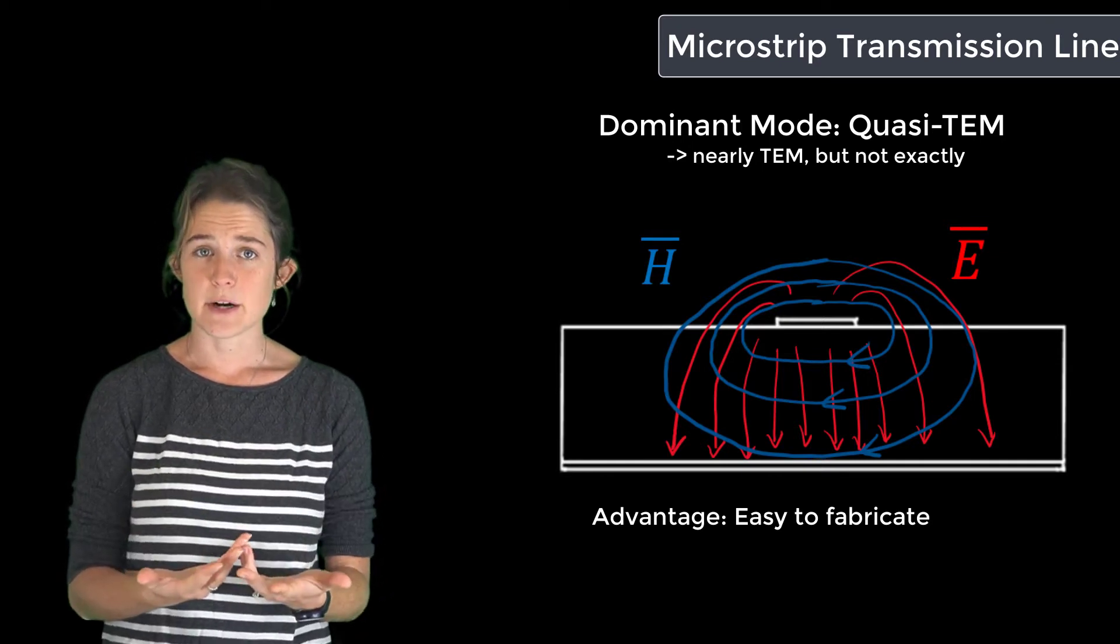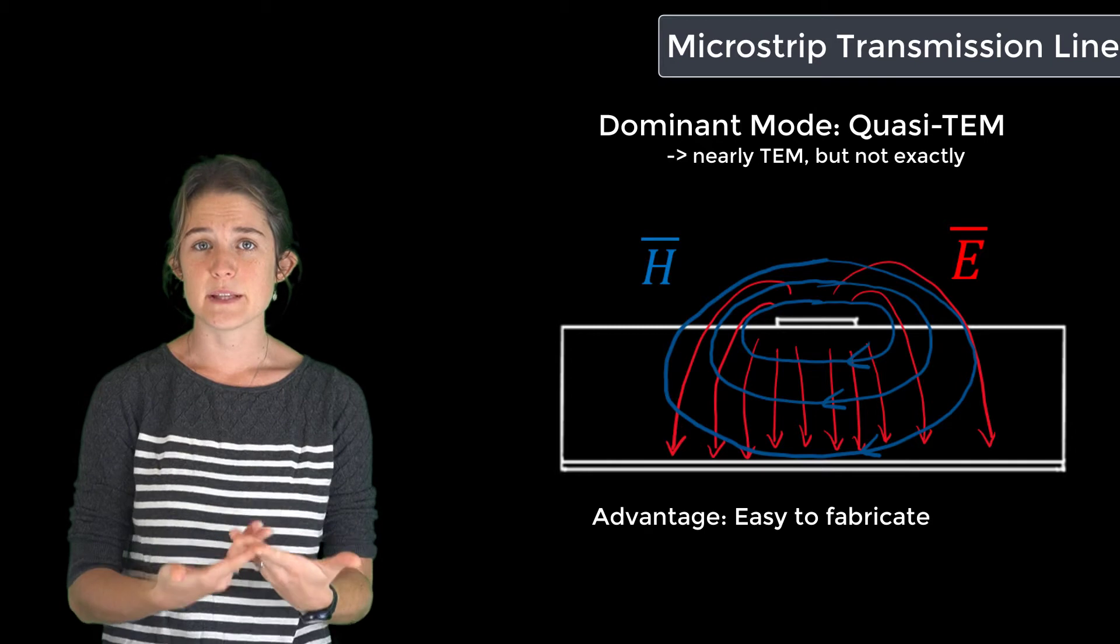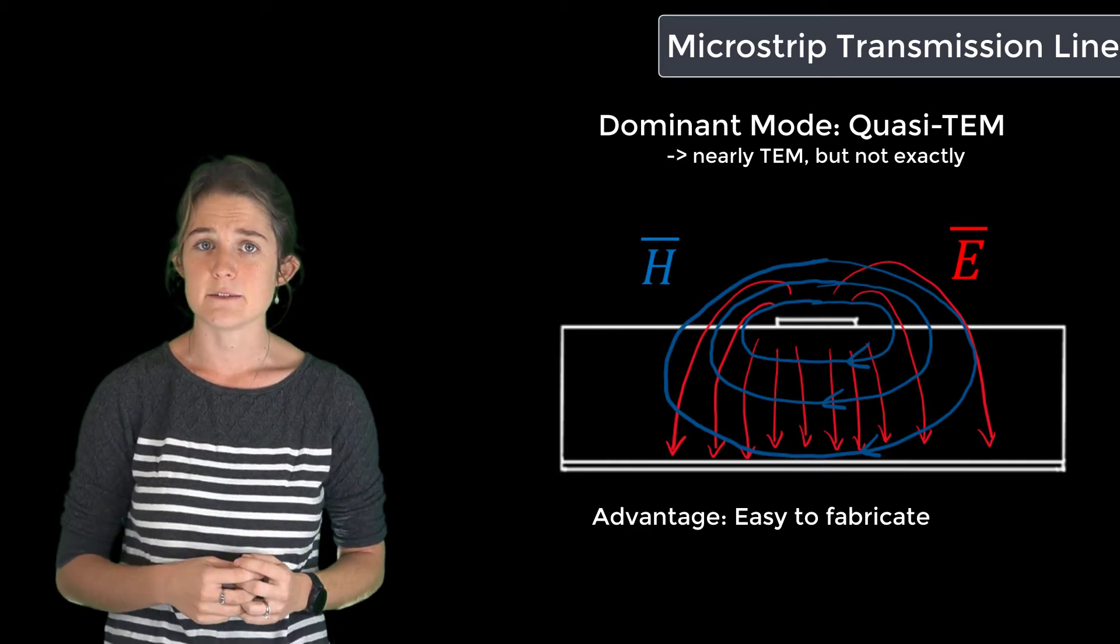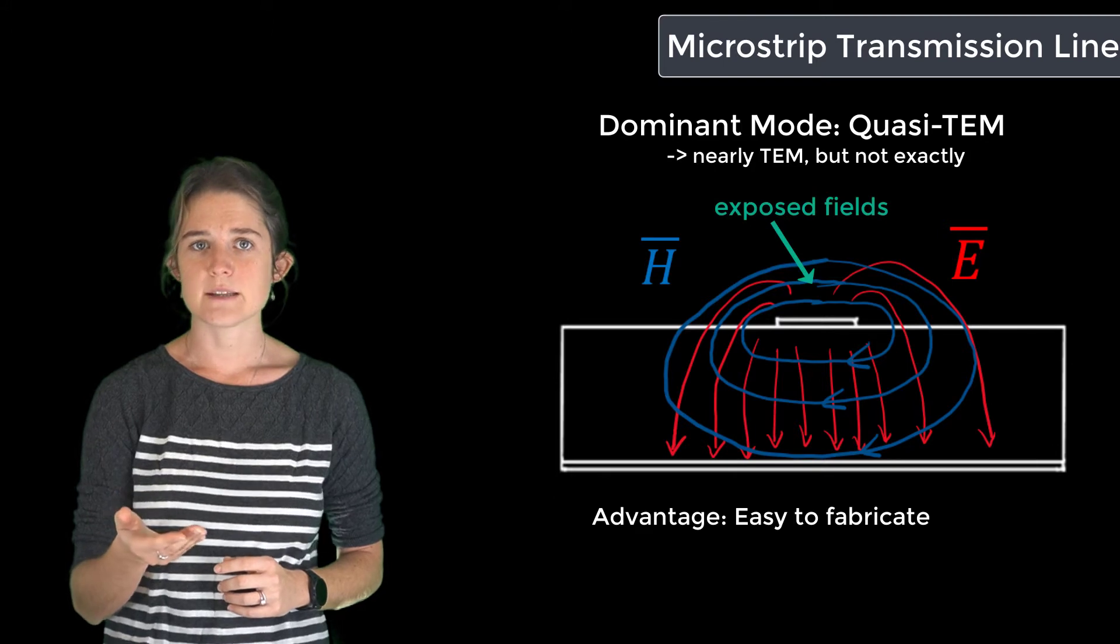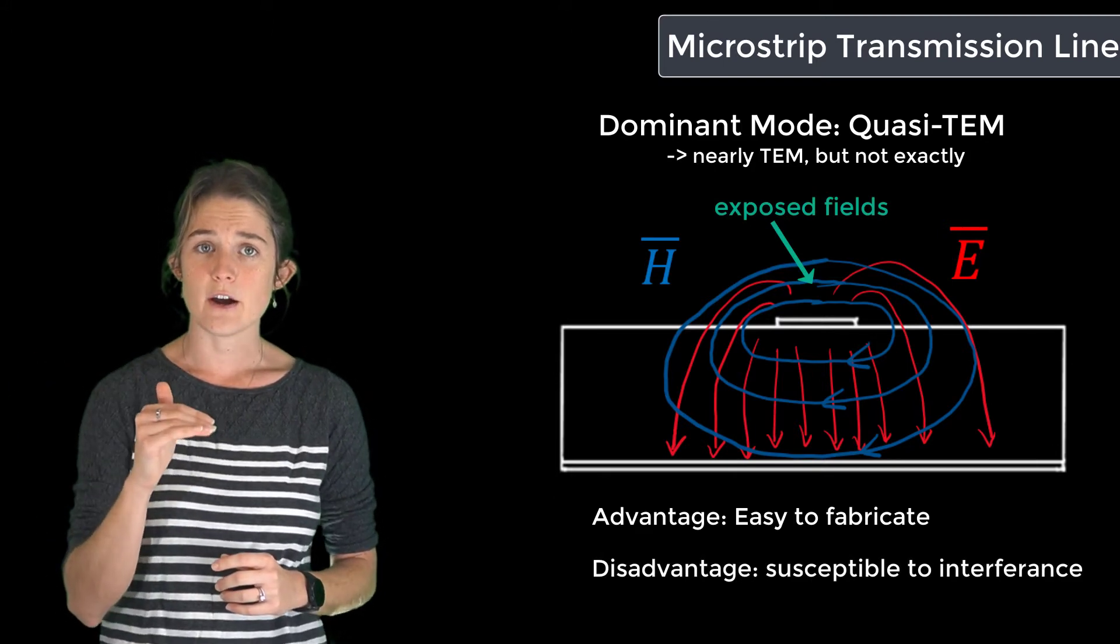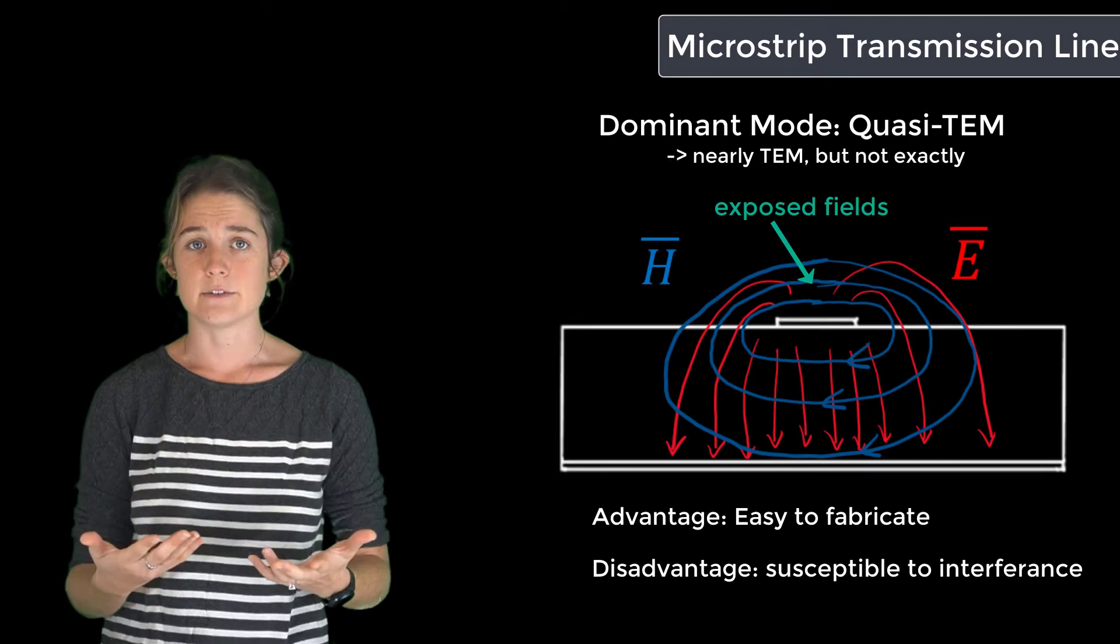However, this comes at a price. It's the accessibility of the center conductor that makes it easy to fabricate, but the fact that the fields are exposed also means that this transmission line is susceptible to interference from nearby objects or external signals.